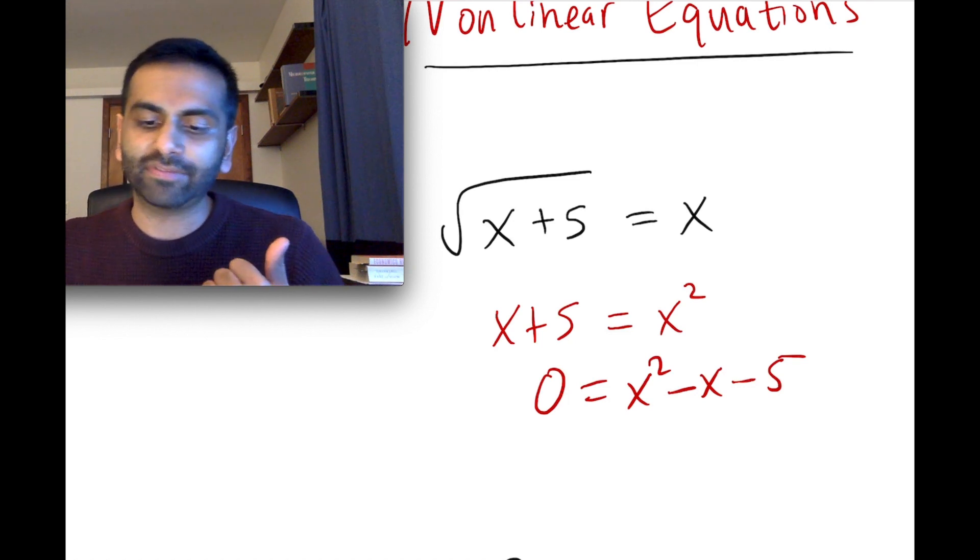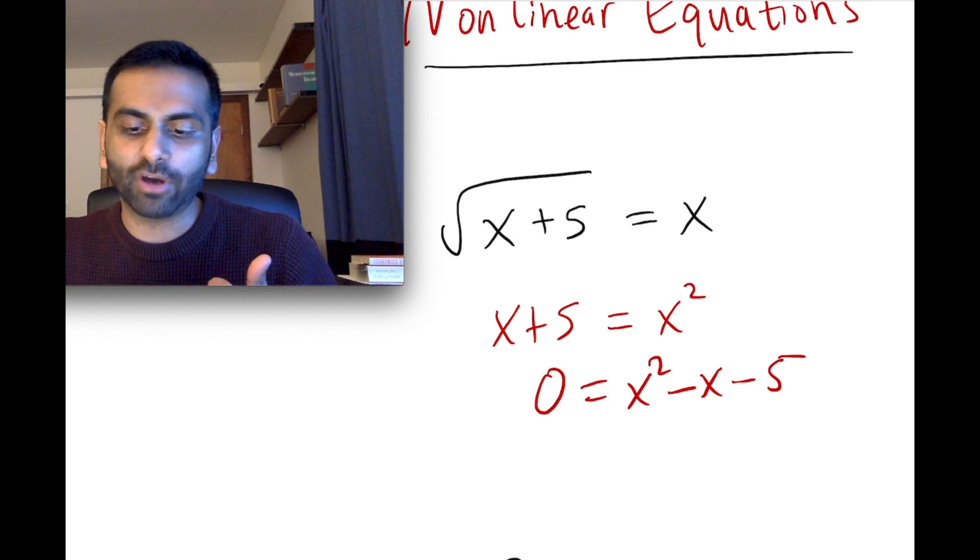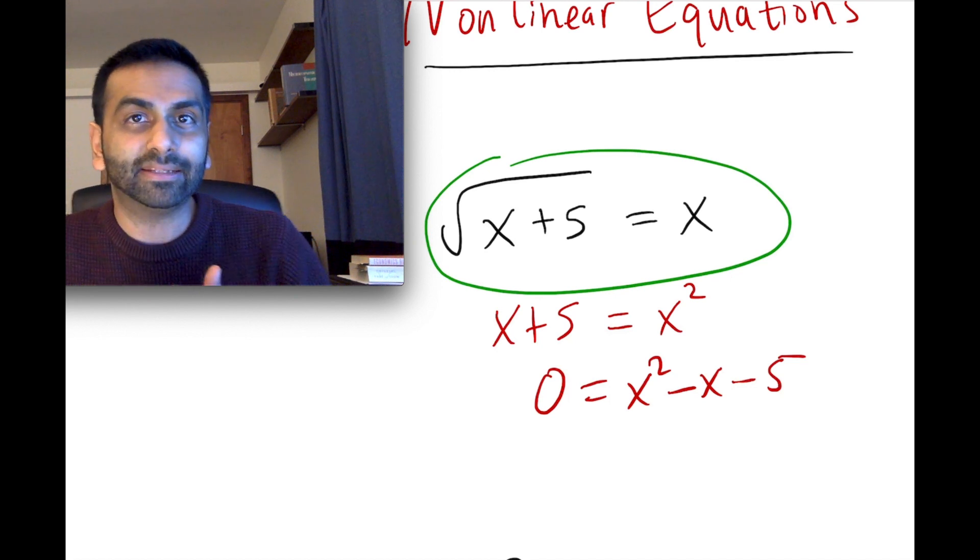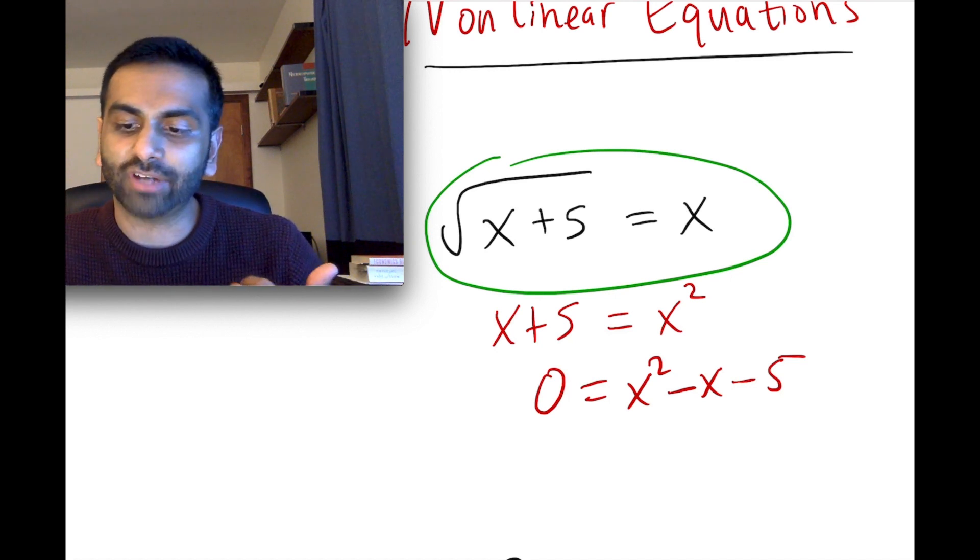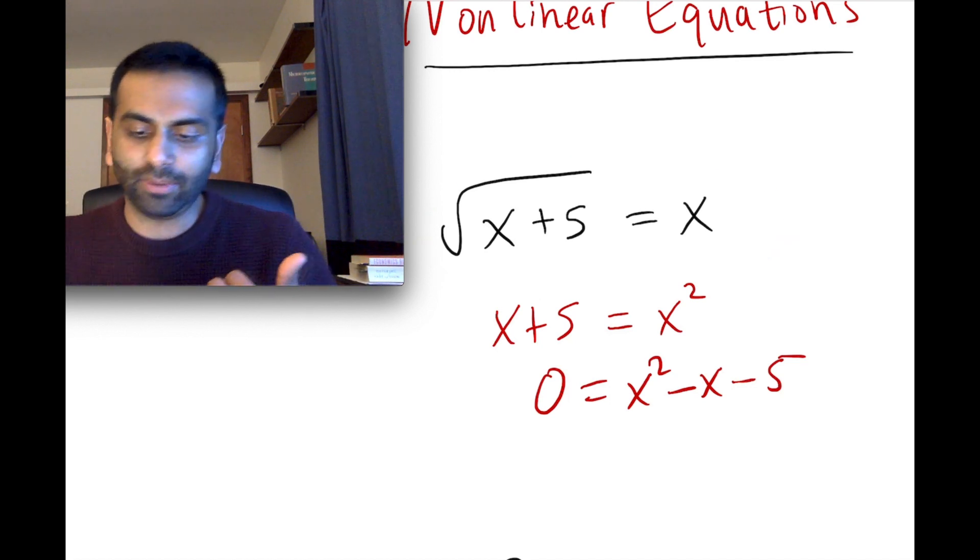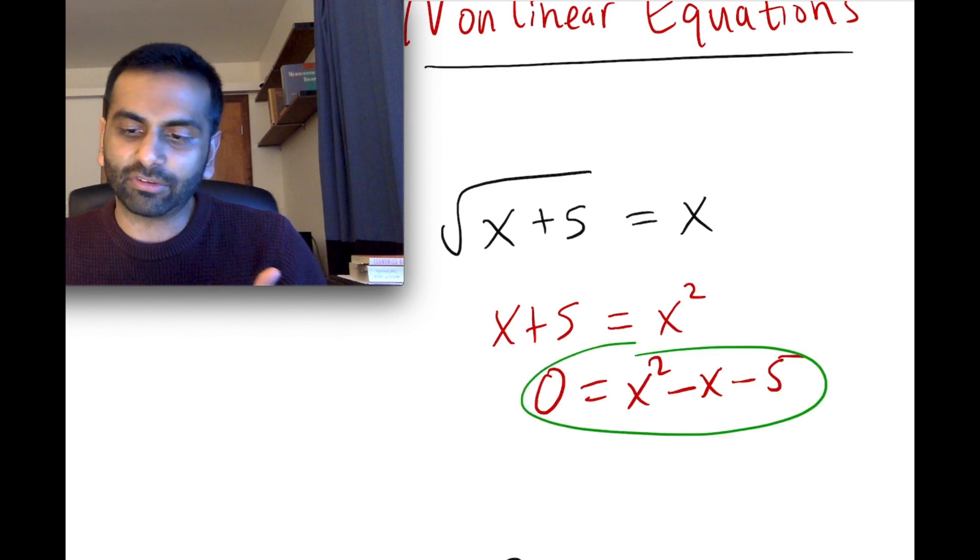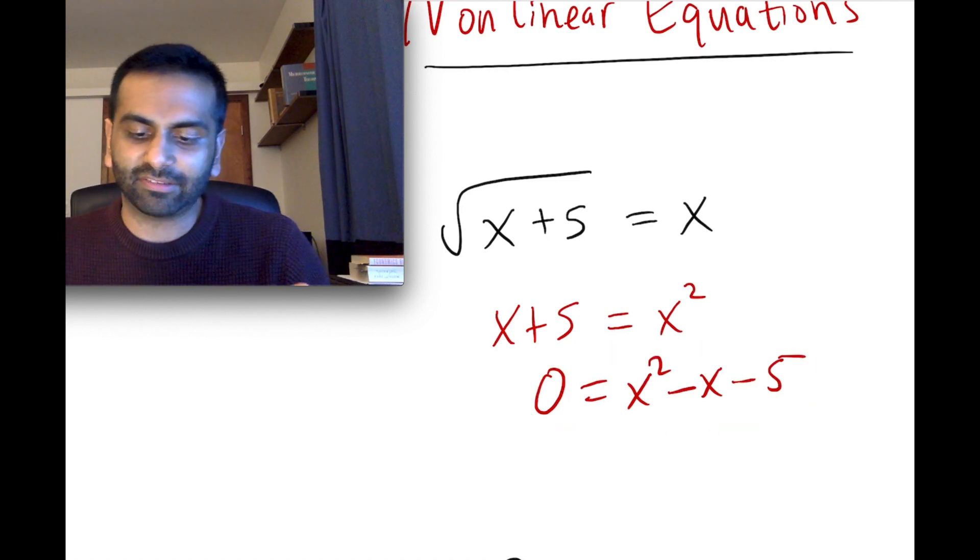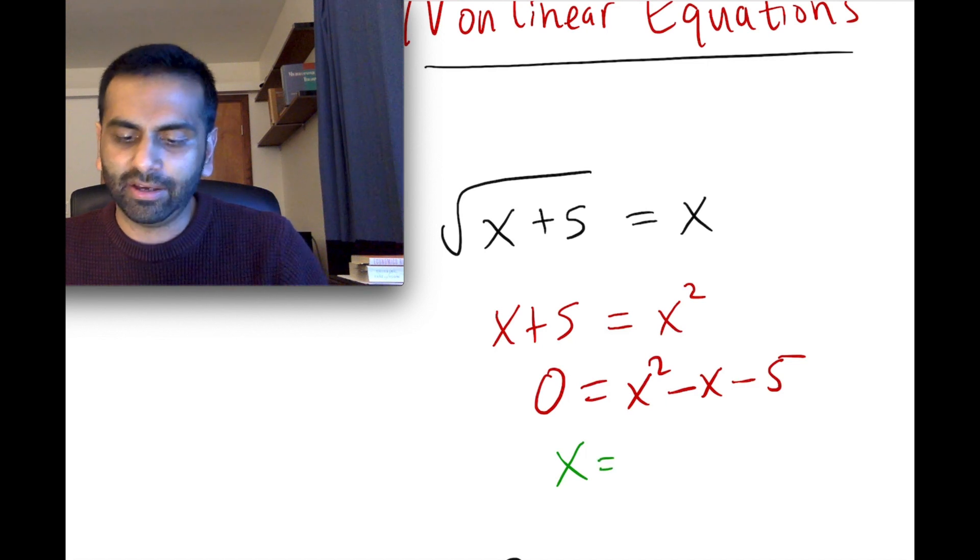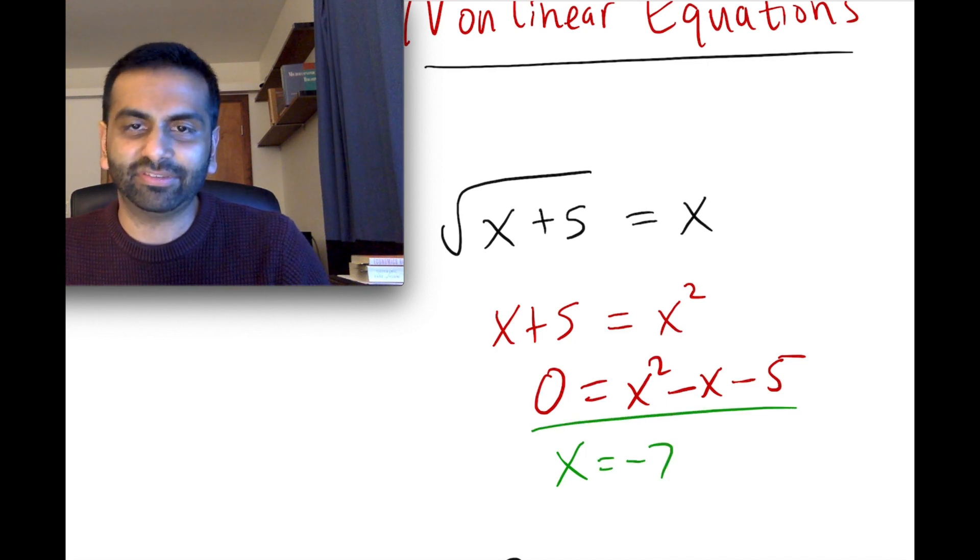The one other thing you have to do, though, is then you have to go back and plug it into the original to make sure it still checks out. Because let's say you end up, this quadratic equation might have a solution that involves like x being some negative number. Let's say that you get x equals negative 7.